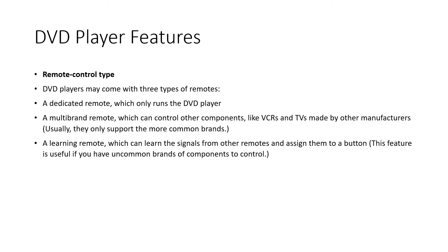DVD players may come with three types of remotes. A dedicated remote only controls that particular DVD player. A multi-brand remote can control other components like VCRs and TVs made by other manufacturers, though it usually only supports more common brands. A learning remote can learn the signals from other remotes and assign them to a button, which is useful if you have uncommon brands of components to control.